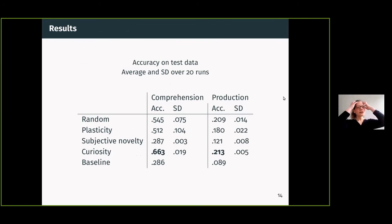First of all, what we see is curiosity models trained in a curious condition are performing the best. They're performing better than models trained in a random condition, but this is not actually the case for plasticity and particularly for subjective novelty. Subjective novelty is really lagging behind.